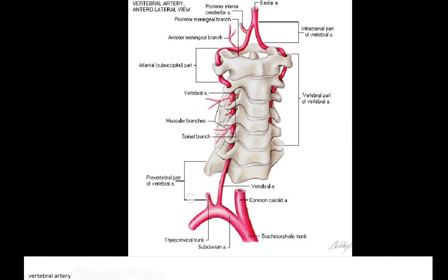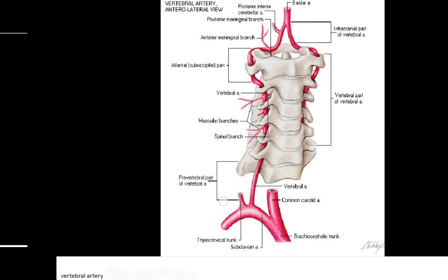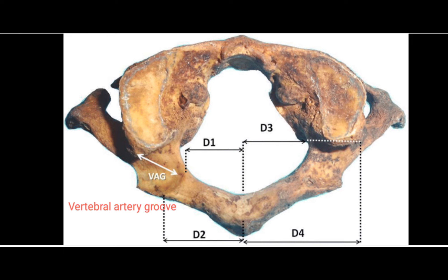Another image related to the vertebral artery is this one — the image of the C1 vertebrae, showing how the artery crosses from C1 and goes to the foramen magnum. Here we can see the C1 vertebrae and the articular surface for the occipital condyles. Behind the articular surface, we need to know the surface marking.